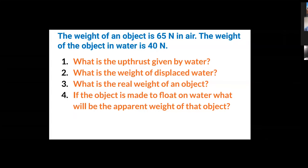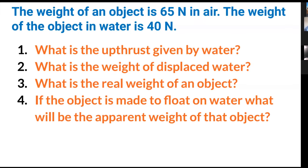Let's start with the first question. The weight of an object in air is 65 Newton and the weight of the object in water is 40 Newton. Based on this information, what is the upthrust given by water? The answer is 25 Newton, because 65 minus 40 equals 25 Newton.